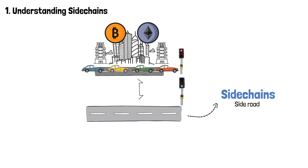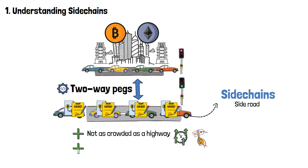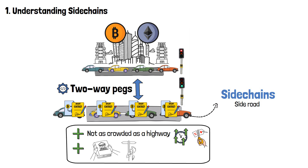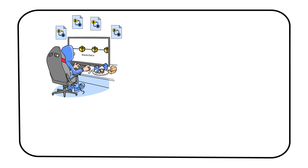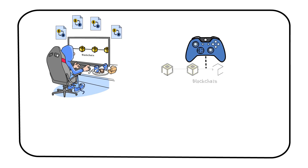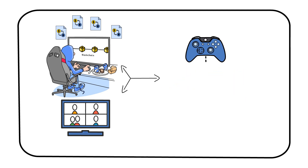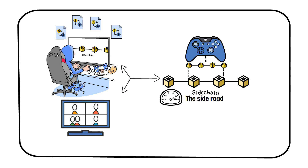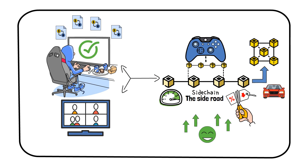Sidechains act as a side road that is connected to the highway at certain points through mechanisms called two-way pegs, allowing transactions and smart contracts to enter and exit the side road easily. The main advantage is that it's not as crowded, so you can get to your destination faster and for less money. The side road might also have different rules and options than the main highway. For example, imagine a blockchain-based video game requiring a lot of transactions. If the game operates on a sidechain, it can process transactions more quickly and cheaply, enhancing your user experience. Once you're done playing, you can transfer your game assets back to the main blockchain, just like merging back onto the highway. Simple, right?